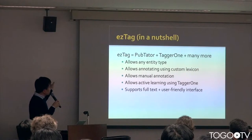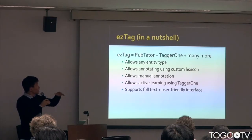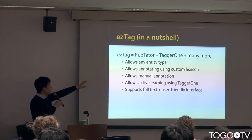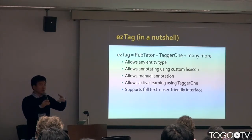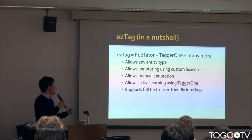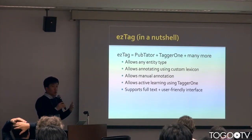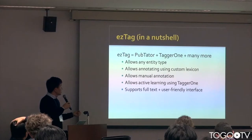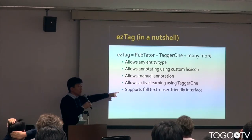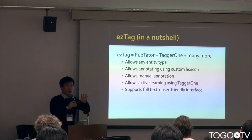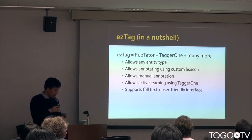So this is the main concept of EasyTag. EasyTag is essentially Pubtator plus tagger1. It allows any type or kind of entity, and you can use your previous lexicons or dictionaries. You can also manually annotate things using a web interface. EasyTag will also support full text, whereas Pubtator is only for abstracts.